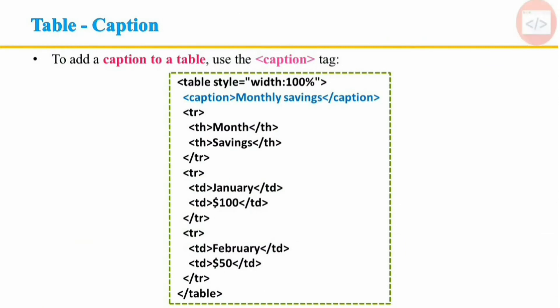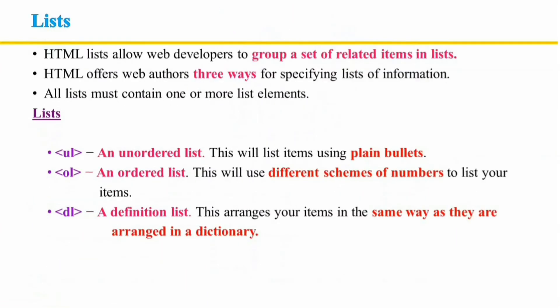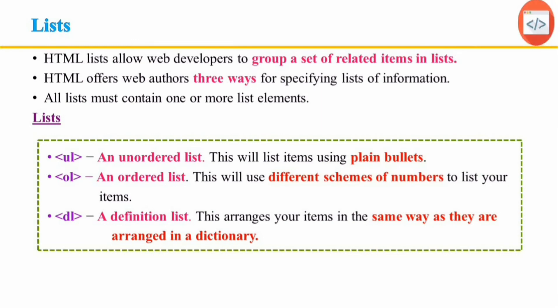A caption functions like a heading for a table. It helps users find the table and understand what it is about. The caption tag defines the table caption and must be inserted immediately after the table tag. By default, a table caption will be center aligned above the table. However, the CSS text-align and caption-side properties can be used to align and place the caption. List-related tags are meant for marking up a list of items. HTML supports 3 types of list: unordered list, ordered list, and definition list. The unordered list uses plain bullets, the ordered list uses different numbering schemes, and the definition list arranges items like a dictionary.